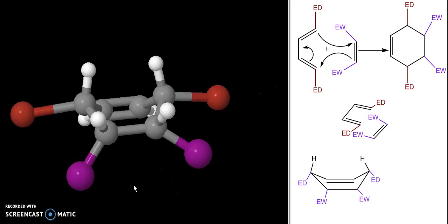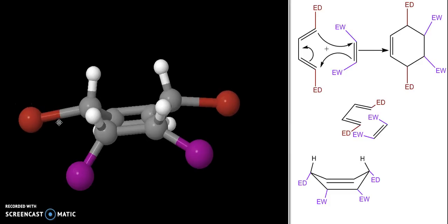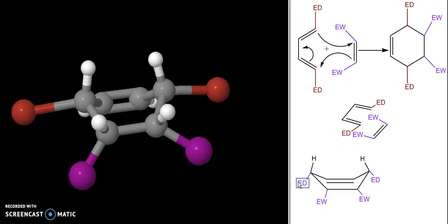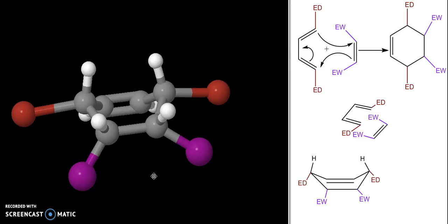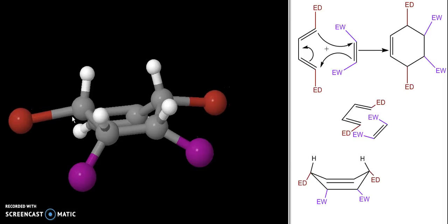What you should notice in both of these representations is that my electron donating group and my electron withdrawing group—they're both pointed in the same direction: down, down, down, down.